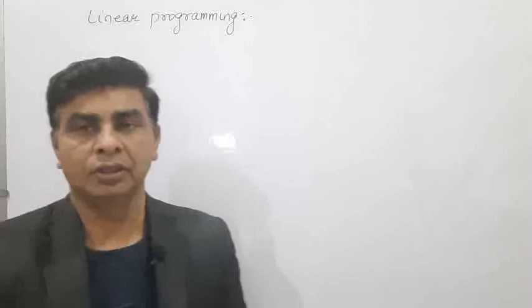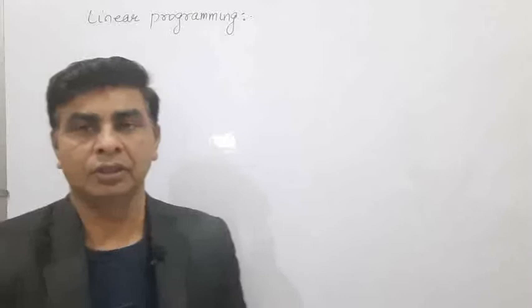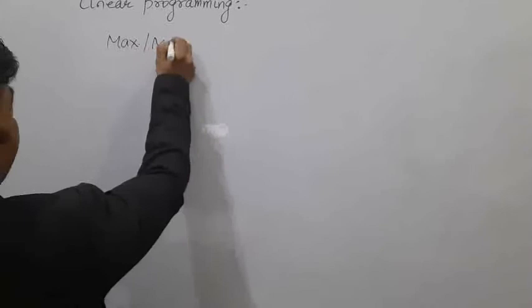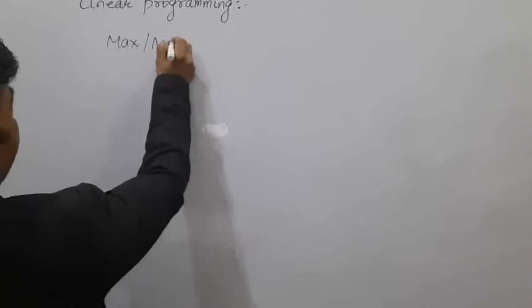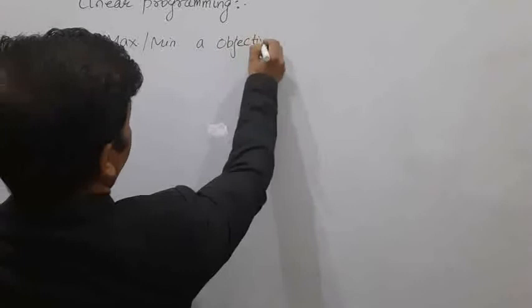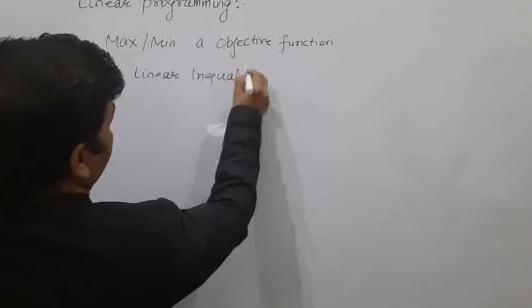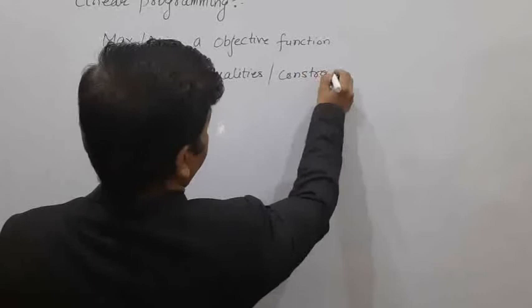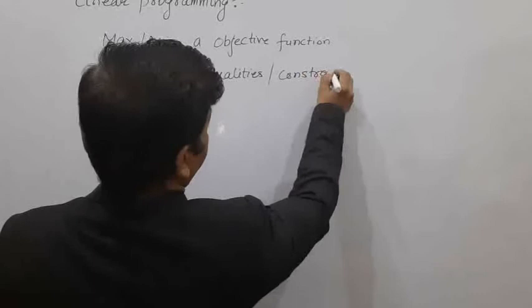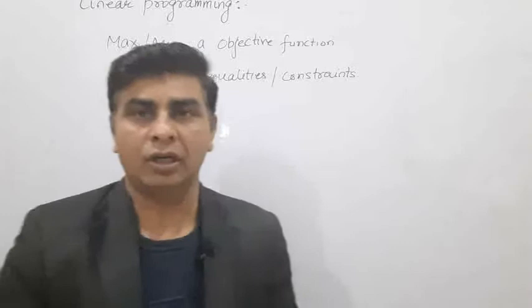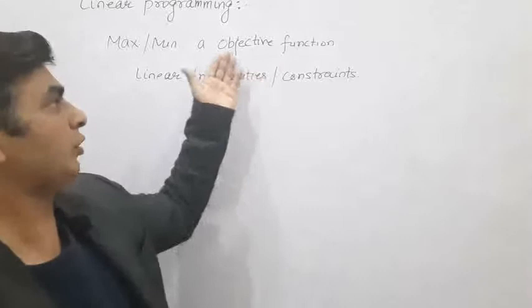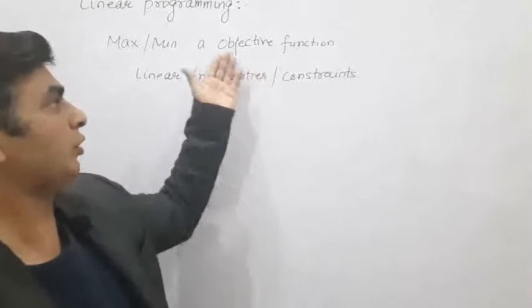First of all, let us see what is the meaning of linear programming. This is a program in which we have to maximize or minimize a function — known as the objective function — through some linear inequalities. These linear inequalities are also known as constraints.